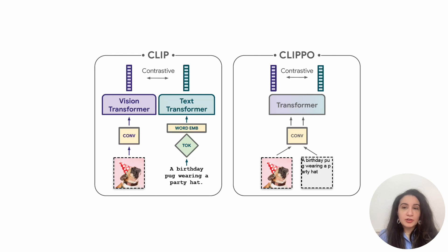This overview figure explains the idea behind CLIPO by highlighting its differences from CLIP. CLIP trains separate image and text encoders, each with modality-specific processing and embedding, on image-alternative-text pairs with a contrastive objective. Alternative text is text on web pages that serves as a substitute to non-text content. CLIPO, as shown on the right, trains a pure pixel-based model with equivalent capabilities by rendering the alt-text as an image, encoding the resulting image pair using a shared vision encoder in two separate forward passes, and applying the same training objective as CLIP.